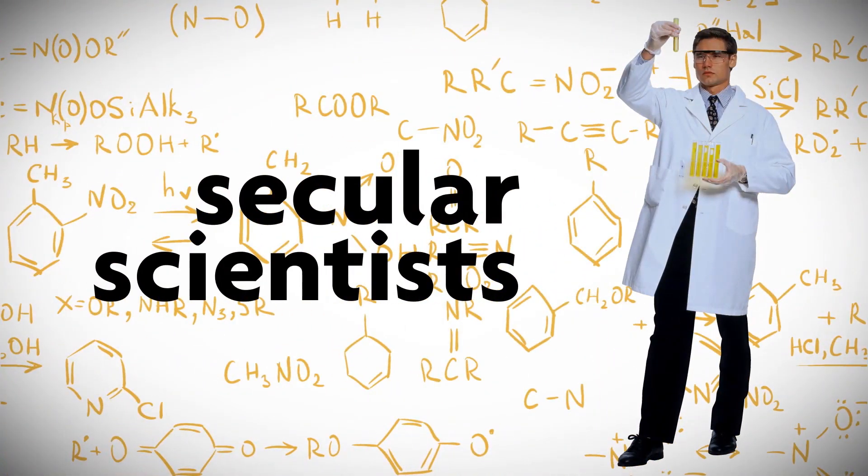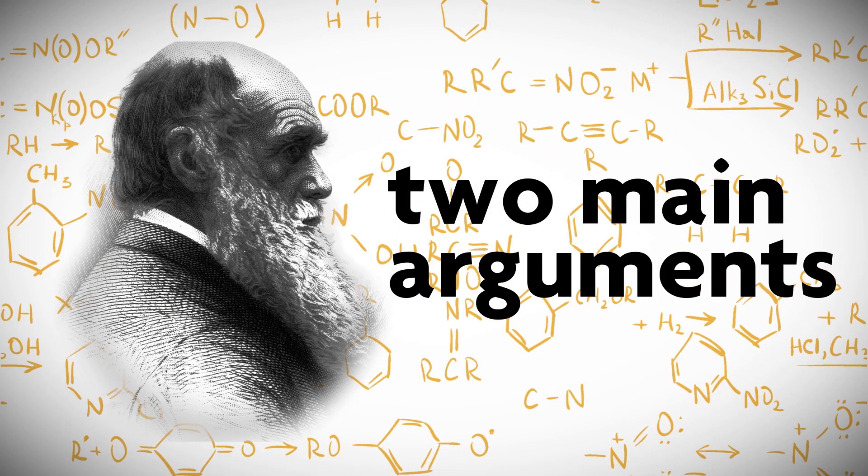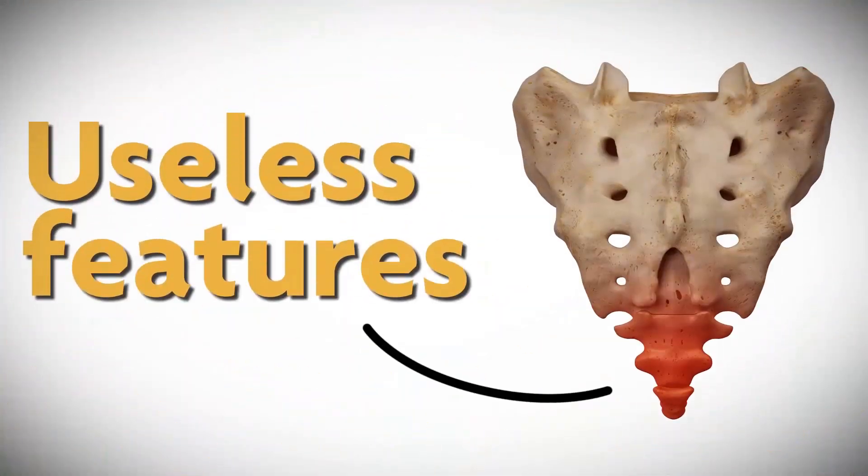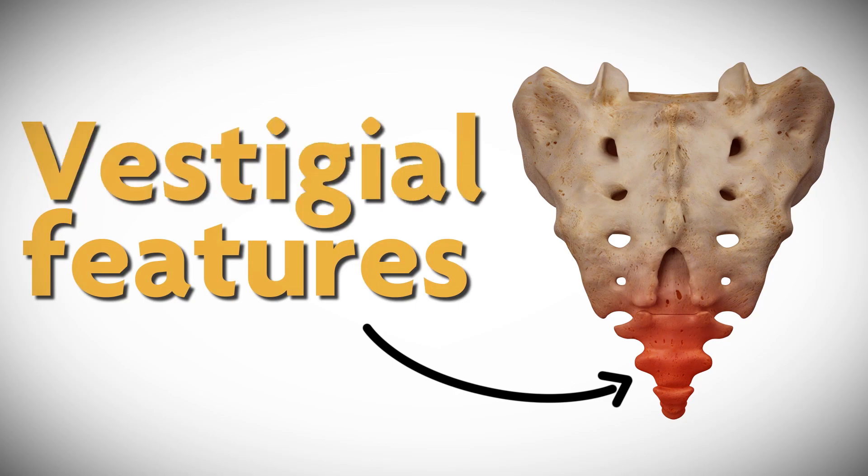Secular scientists support Darwin's hunch with two main arguments. One, fossils. And two, useless features, also known as vestigial features.